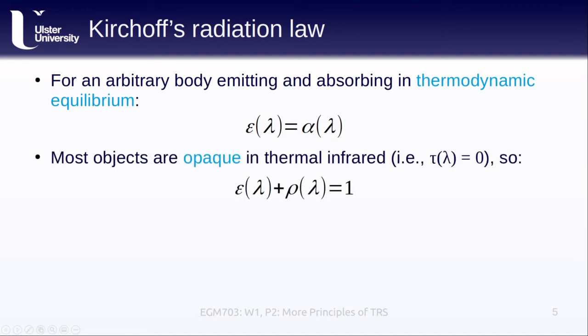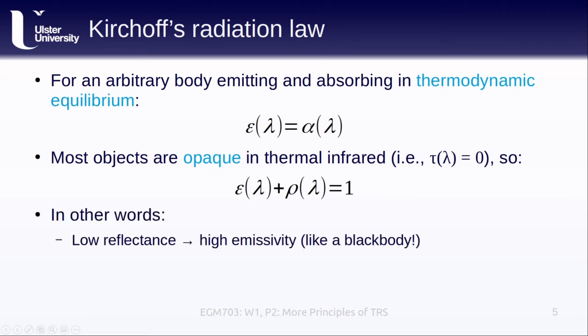In addition to this, we also know that most objects are opaque in the thermal infrared. That is, the transmittance of the object, or the surface, is equal to zero, and so the equation from the previous slide becomes this. The emittance plus the reflectance is equal to one. In other words, objects that have a low reflectance have a high emissivity, kind of like an idealized blackbody. And of course, conversely, objects with a low emittance have a high reflectance.